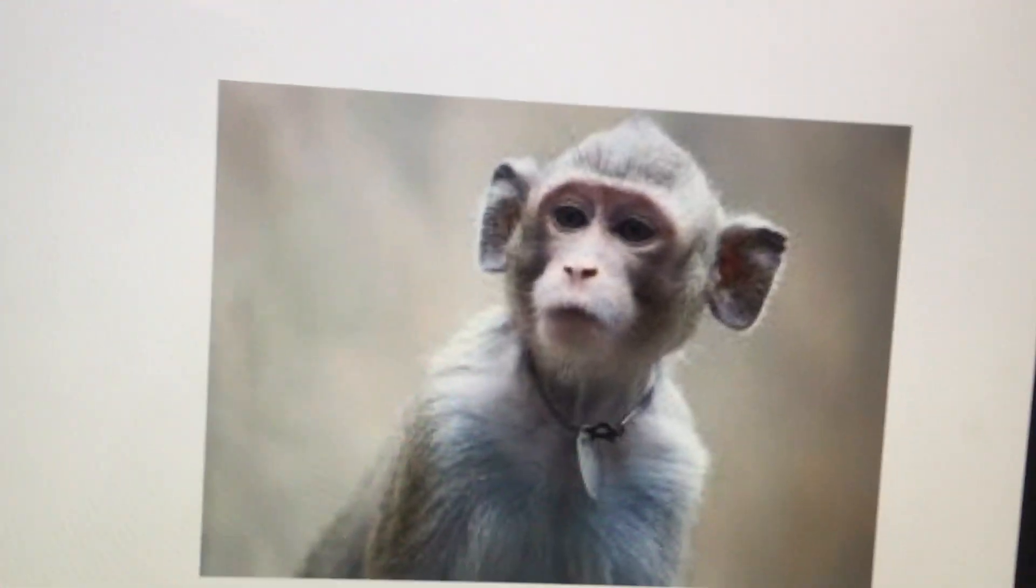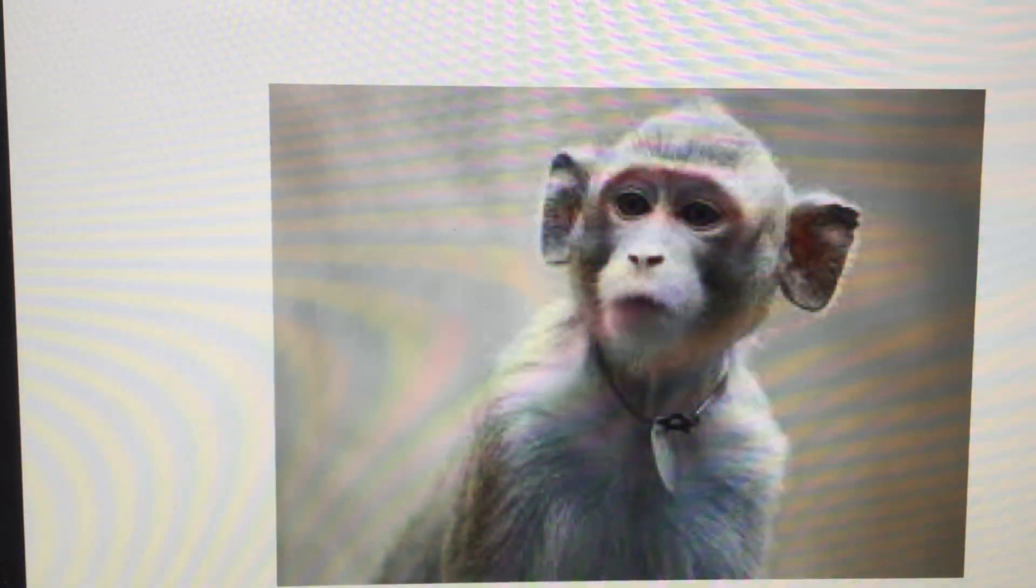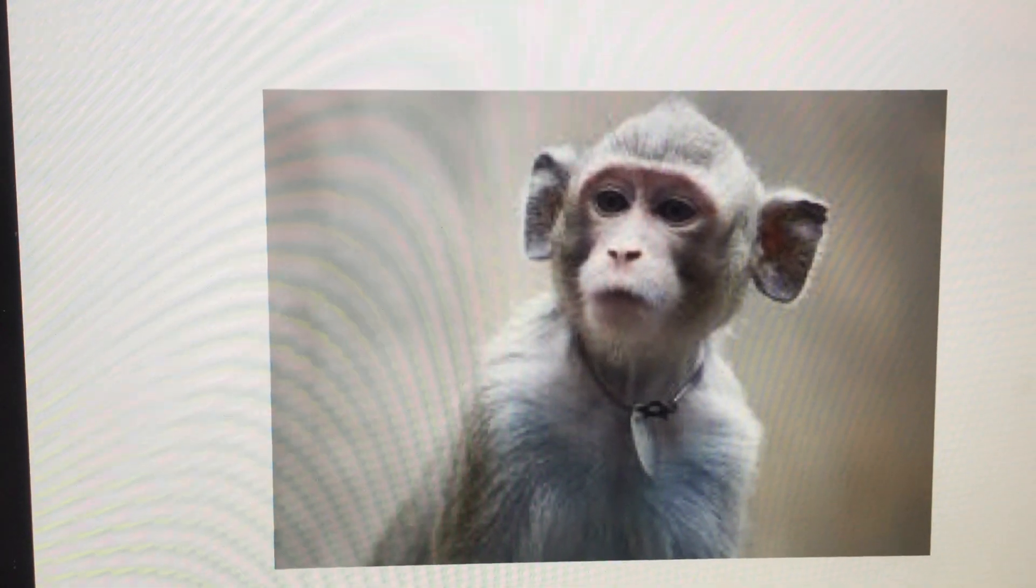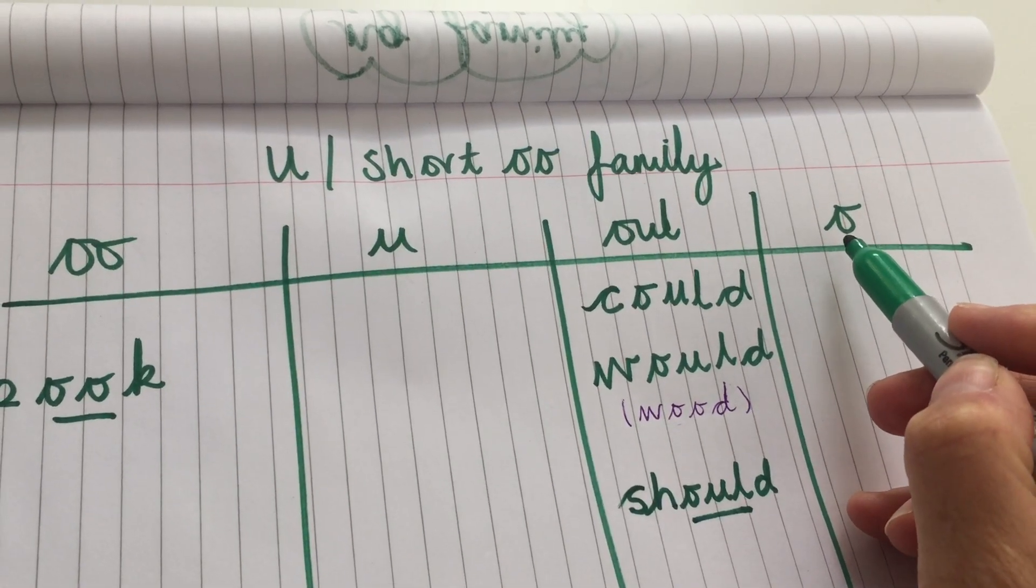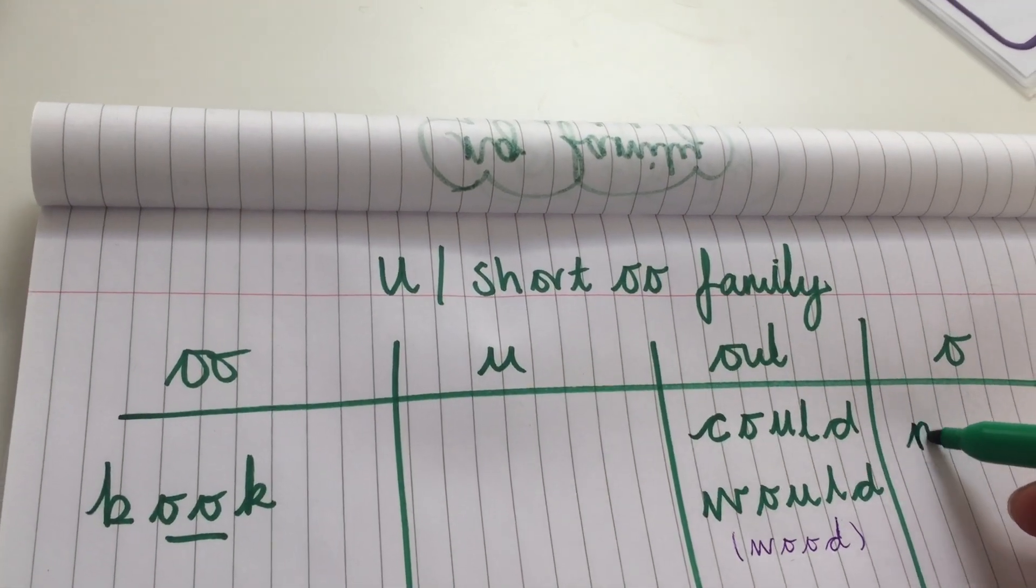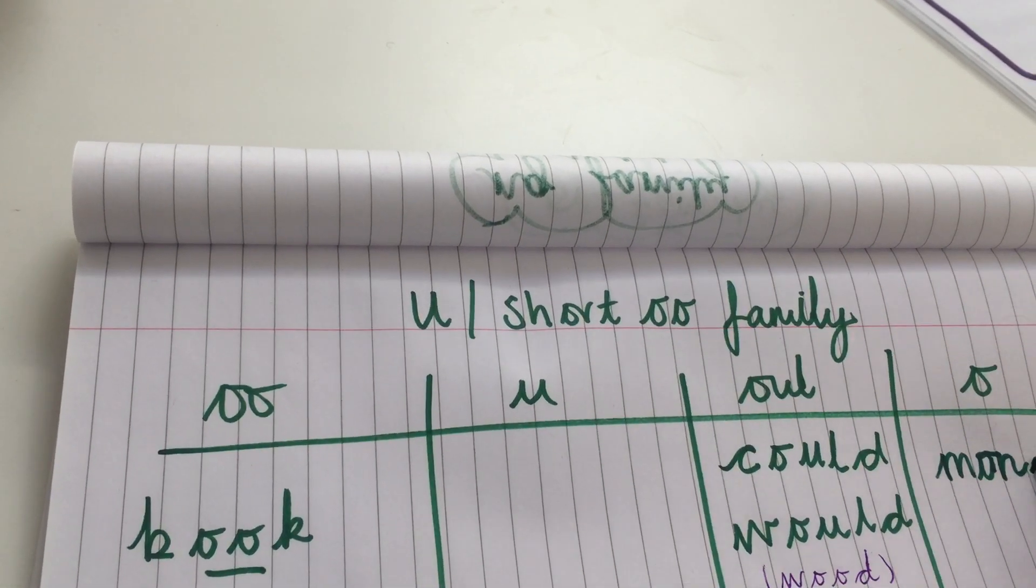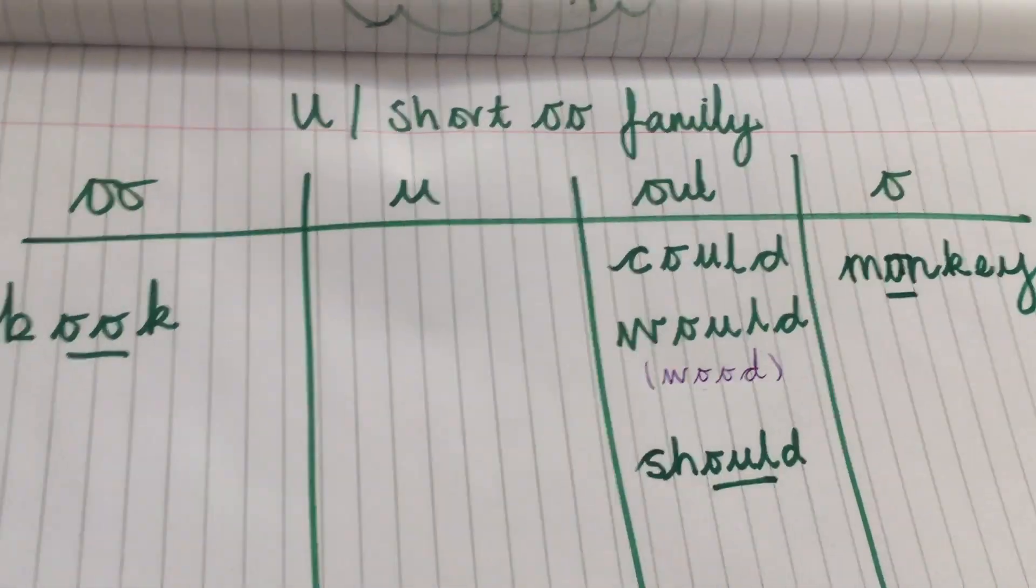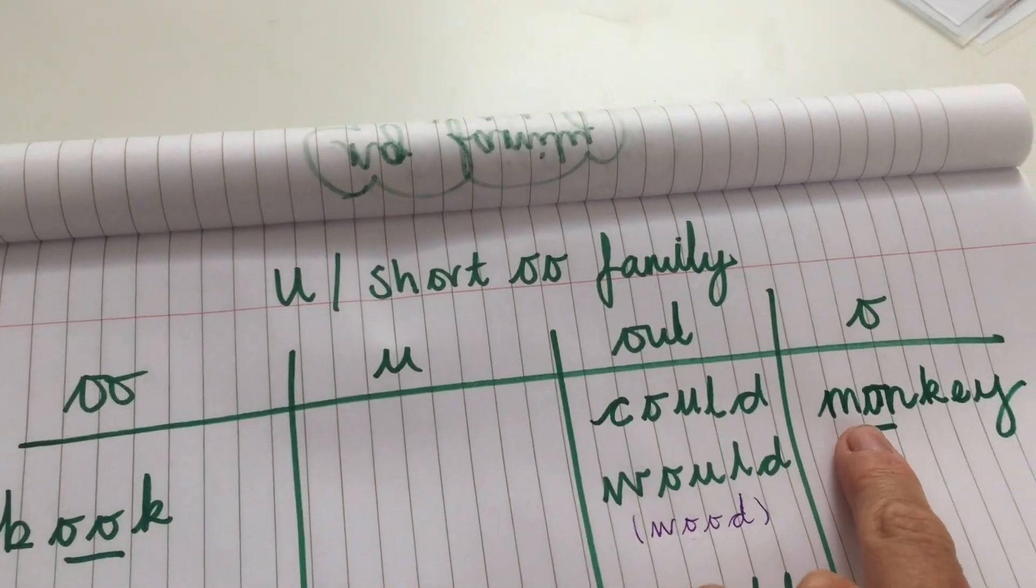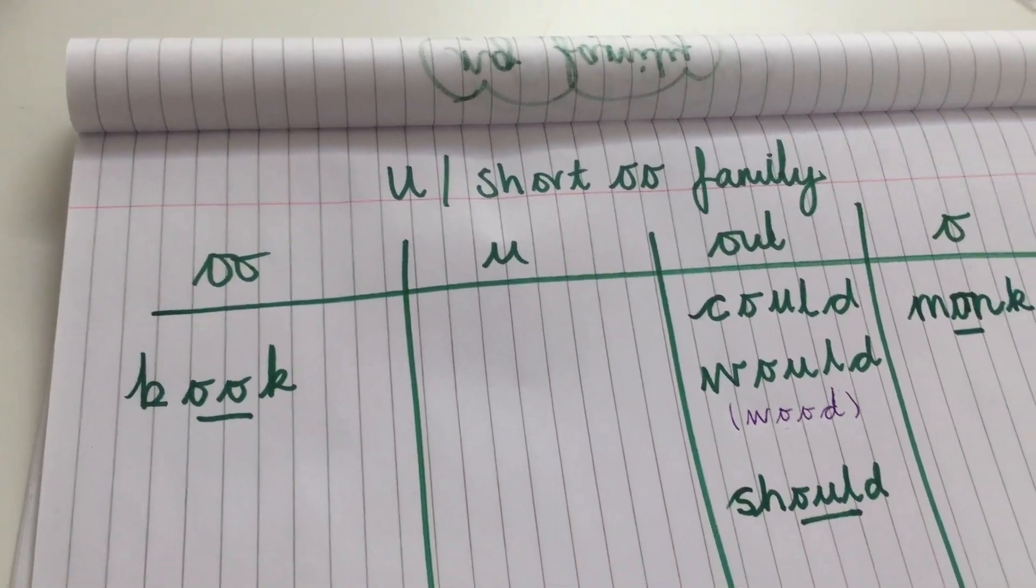Here we have a picture of a cheeky monkey. Now it does sound like there's an U sound in monkey, but there isn't. The U sound is made using the O making an U sound. Monkey, monkey, monkey. Can you see there? It's the O making the U sound, monkey.